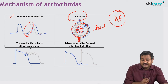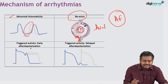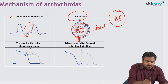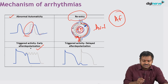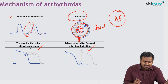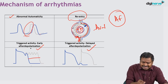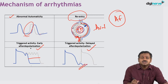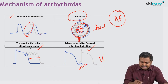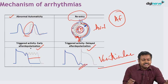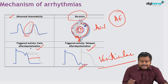The third mechanism is triggered activity, which can be of two types: early after-depolarization and delayed after-depolarization. Both can cause arrhythmias and are basically associated with ventricular arrhythmias. So the three main mechanisms are abnormal automaticity, re-entry, and triggered activity.